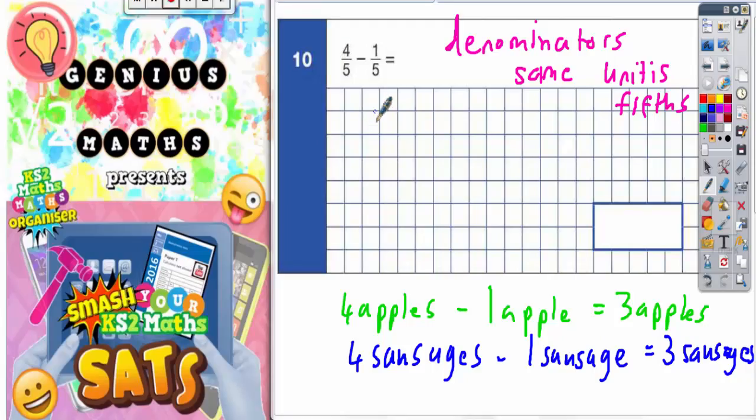So four fifths take away one fifth is going to be three and the unit we're dealing with is fifths. It's going to be three fifths. And that's your final answer. Very easy if the denominators are the same.